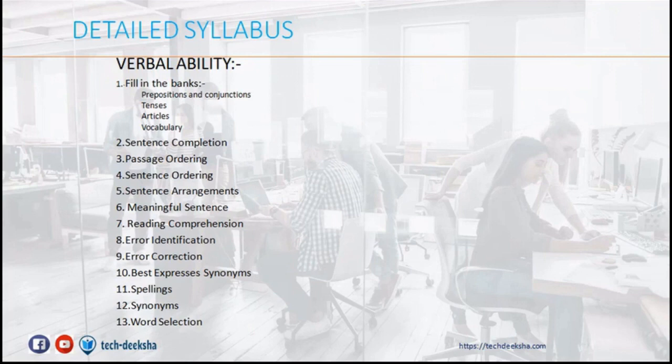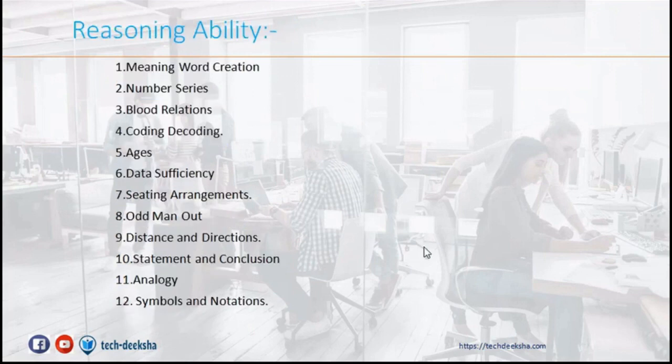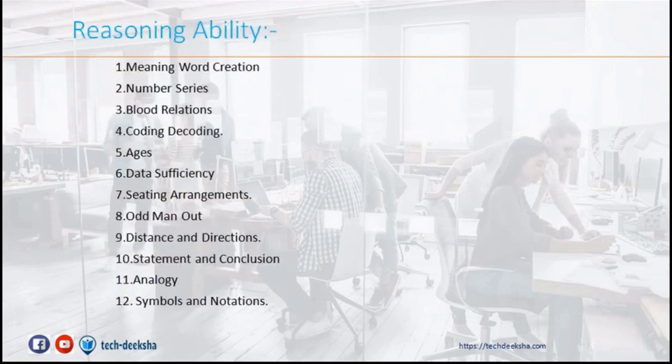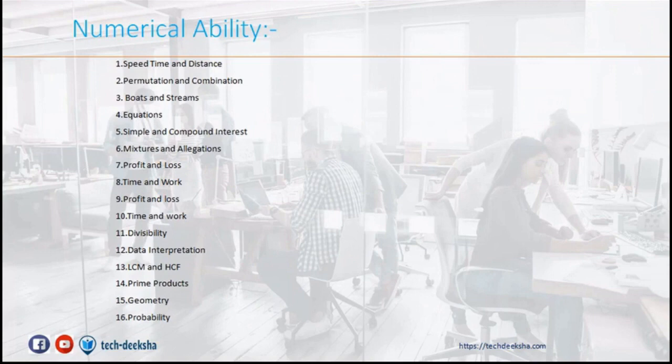In reasoning ability, you can have questions from meaning word creation, number series, blood relations, coding decoding, ages, data sufficiency, seating arrangements, odd man out, distance and directions, statement and conclusion, analogy, and symbols and notations. In these parts, TCS hasn't changed many things. These syllabi are almost the same as last year, so nothing to worry about.